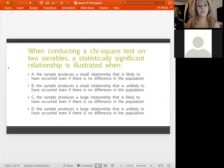All right, let's try this one. So when conducting a chi-squared test on two variables, a statistically significant relationship is illustrated when what? So go ahead and read through these options. Let me know if you think the answers and then we will review together.